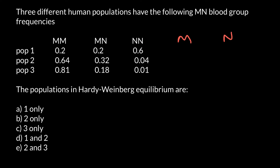Now we have to find which populations are in Hardy-Weinberg equilibrium. We need to know that if a population has only two alleles, all the alleles M plus all the alleles N would make 1, or 100%. We have all the numbers in each population, and if we combine them we get 1: 0.2 plus 0.2 plus 0.6 equals 1. The same holds for the other populations.